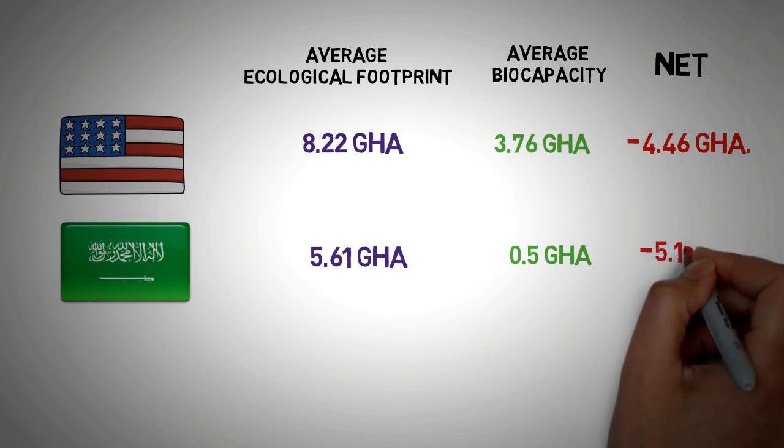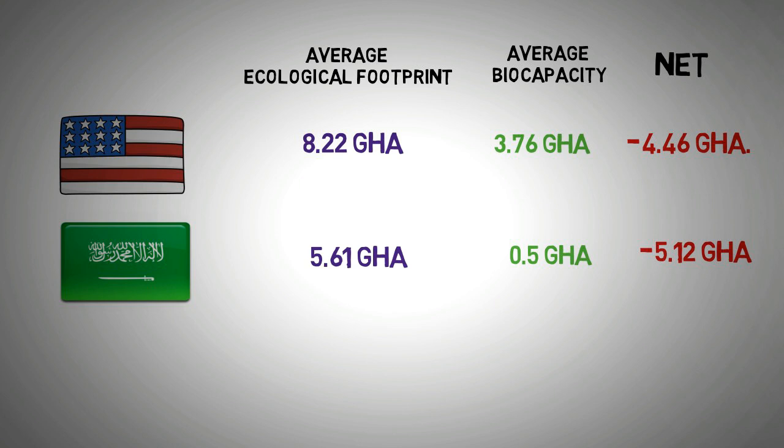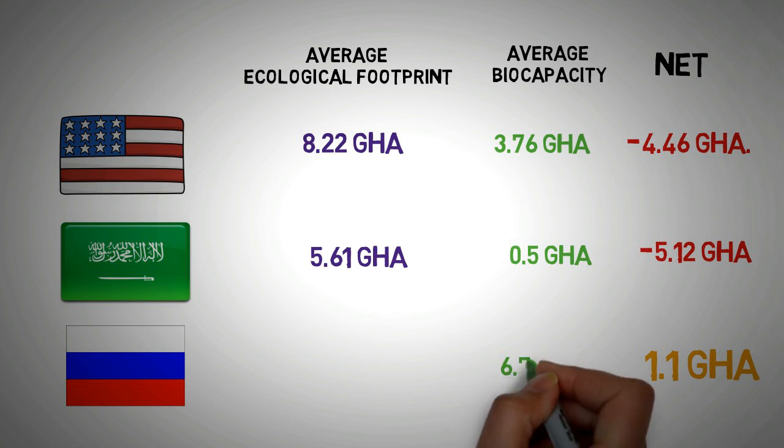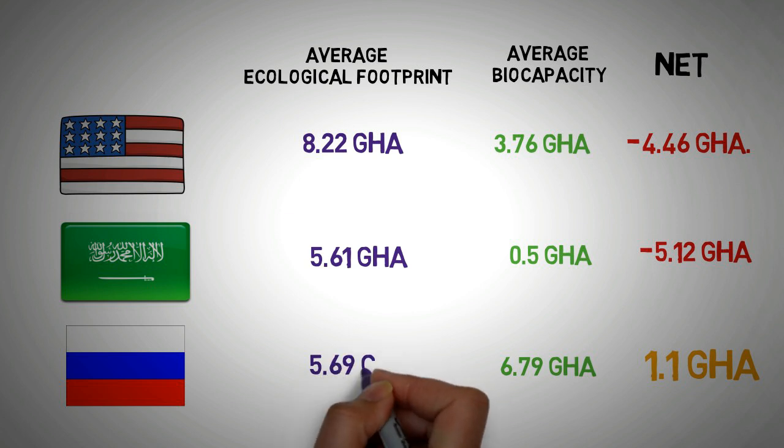Russia, on the other hand, because of its large productive land area, is an ecological creditor by 1.1 global hectares. Russia has a bio-capacity of 6.79, while its footprint is only 5.69 global hectares. Students are advised at this point to look at ecological footprint and bio-capacity charts for their city and country. Link is available in the resources area.